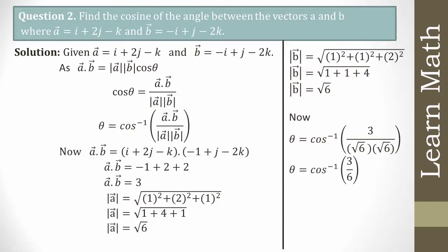√6 × √6 = 6, so the square and square root cancel. Therefore θ = cos⁻¹(3/6) = cos⁻¹(1/2) = 60°.